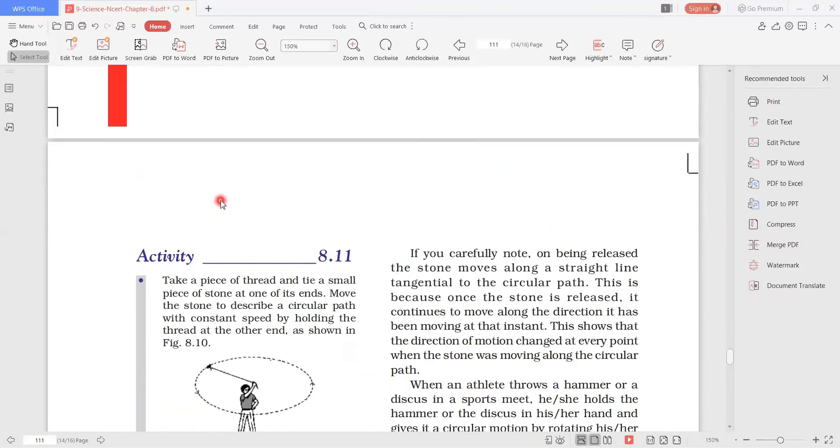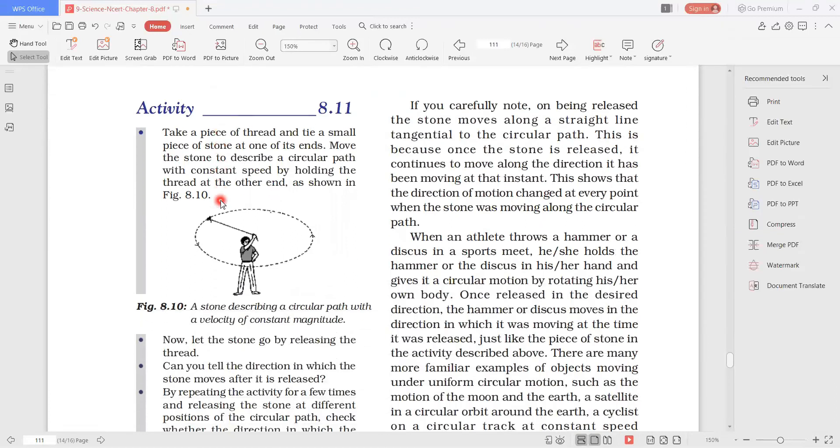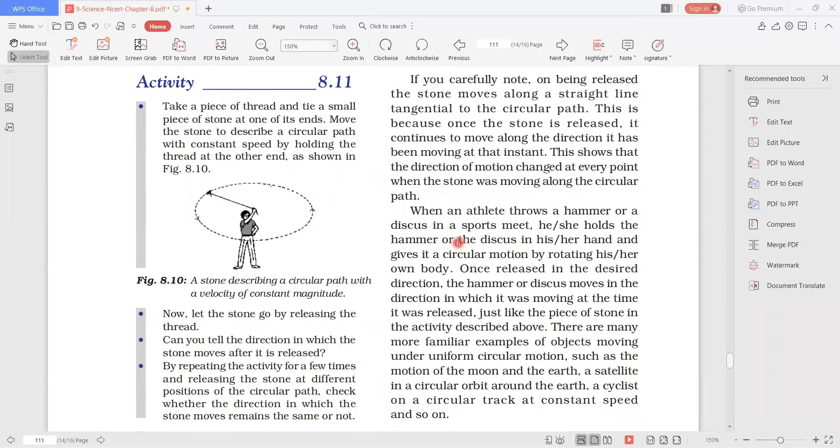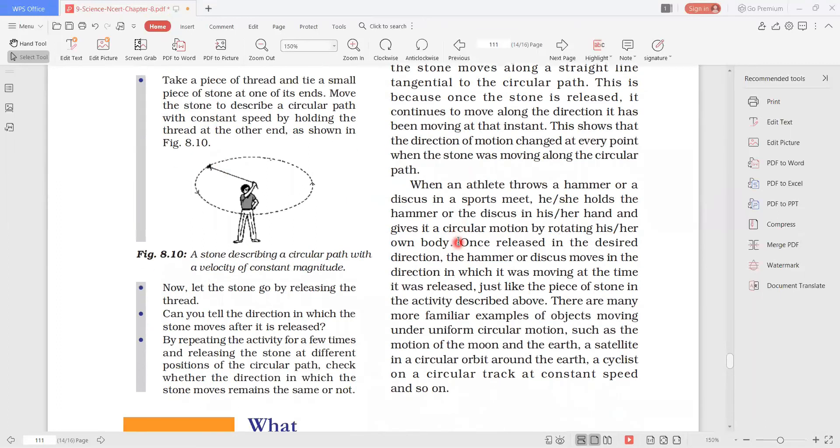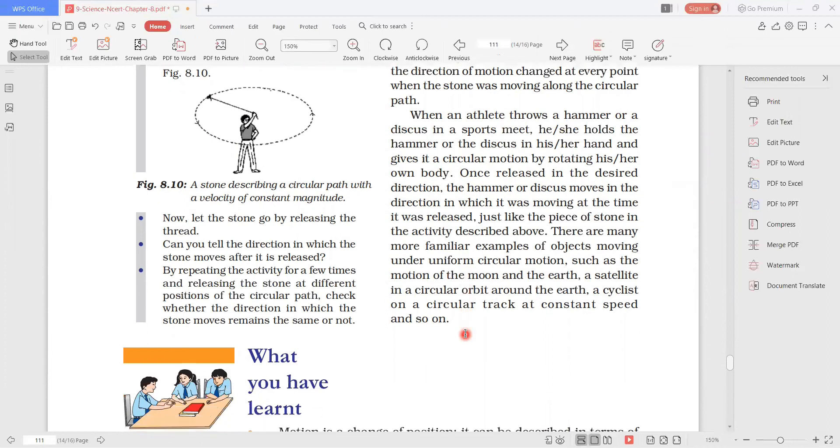So this was it for this chapter. This topic was very small. There are some examples here. Athlete throws a hammer or a discus in sports. These are all examples in the circular track. We do race. The moon is in circular motion. The sun is in circular motion.